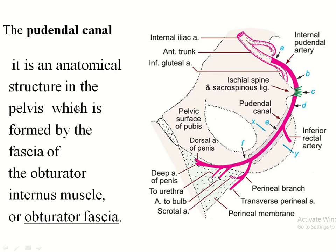Assalamu alaikum, welcome all to Easy Human Anatomy channel. In this video I discuss the pudendal canal, also known as the Alcock's canal. It is an asymmetrical structure in the pelvis, situated in the medial surface or pelvic surface of the ischium, and it is formed by the obturator internus muscle or obturator fascia.